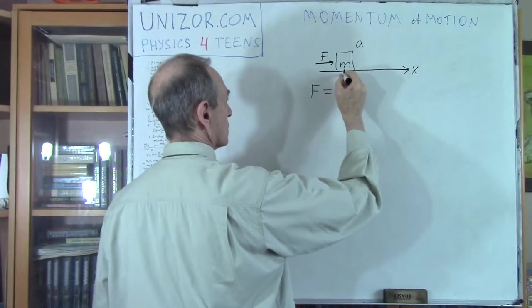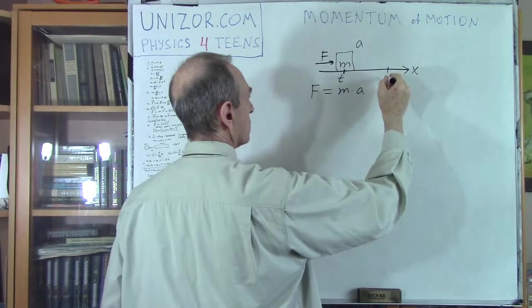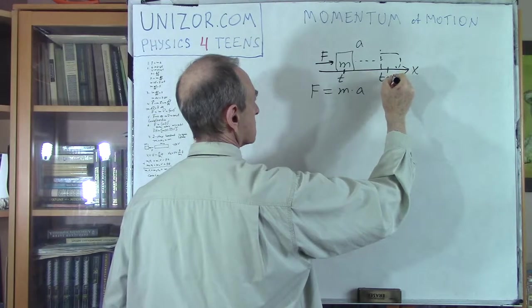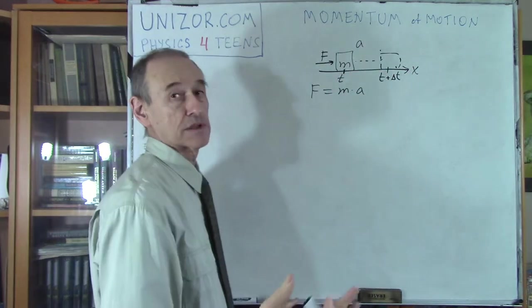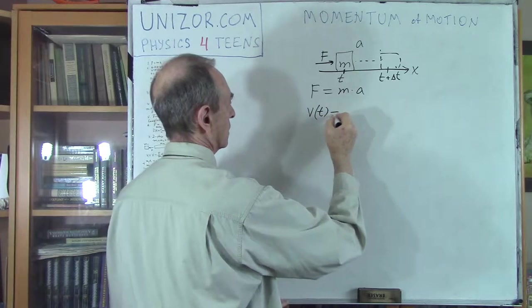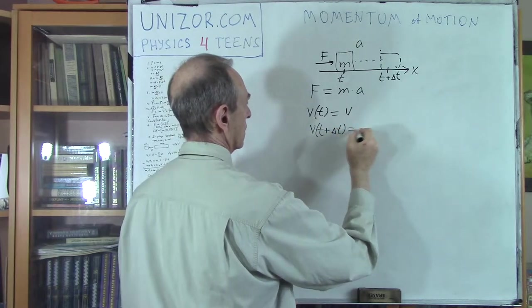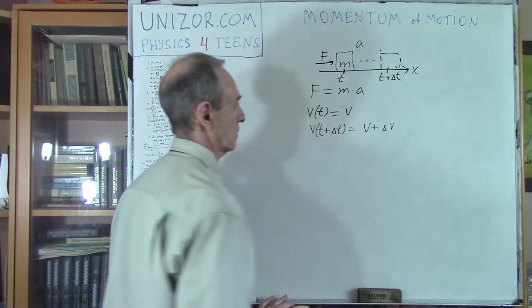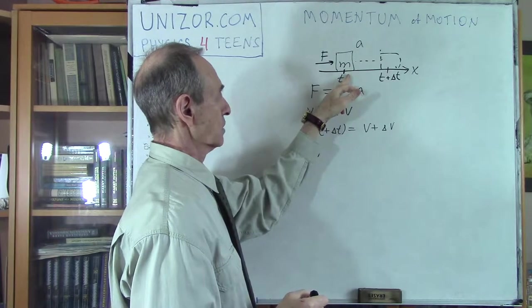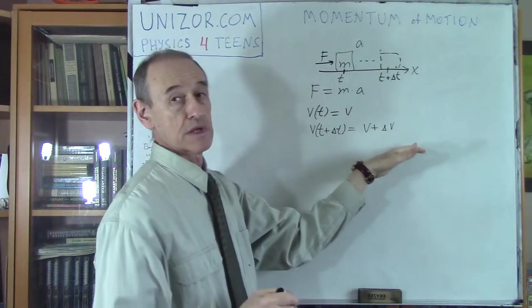Let's now consider two moments in time. First is when the object was here at time t. And another moment in time when the object moved to this position at t plus delta t. So this interval is delta t. Speed was V, and speed at t plus delta t was V plus delta V.